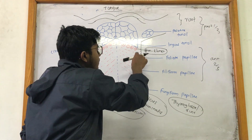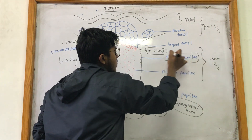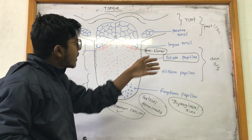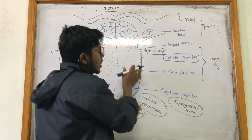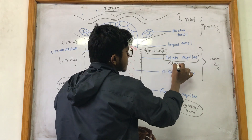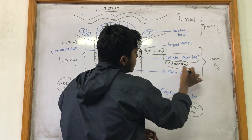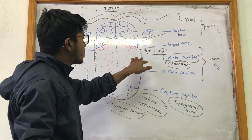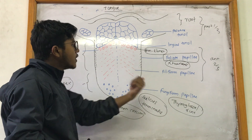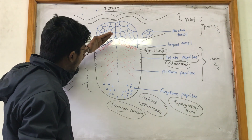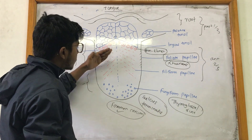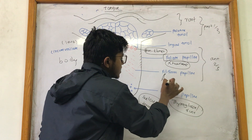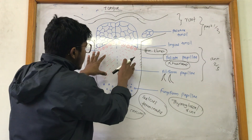The second type of papilla, present at the margins of the tongue, is known as foliate papilla. These are not well developed in humans — they are well developed only in rabbits. The third type is filiform papilla, present parallel to the V-line formed by the circumvallate papilla. They are cone-shaped and the most numerous, found mainly on the body.